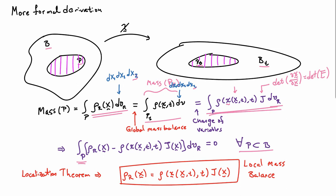And that will tell me that the reference density is equal to the spatial density times the Jacobian. And so, this is the statement of local mass balance derived a little bit more formally than we did in the previous construction.